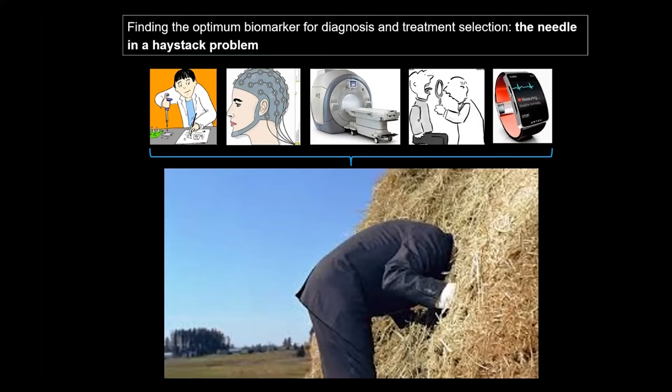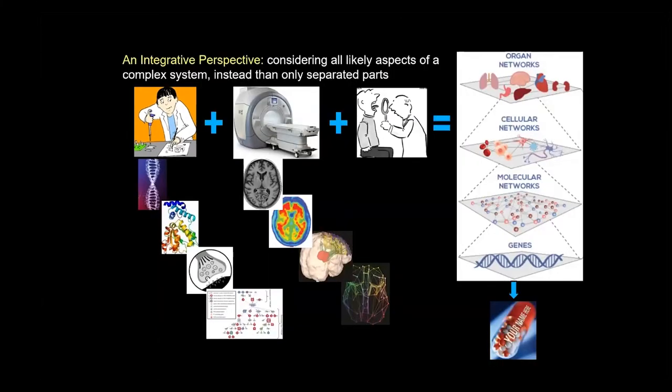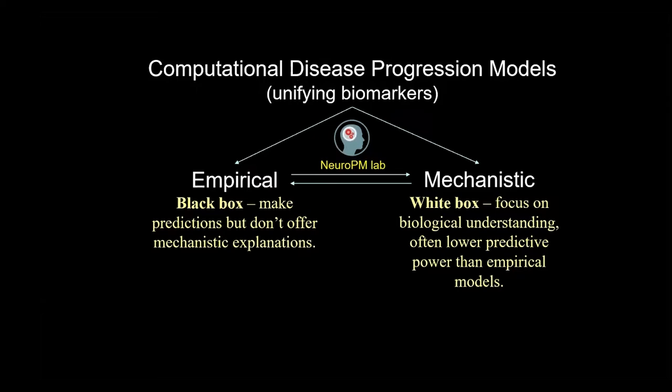How to identify the optimal biomarker for tracking the disease progression associated with each disorder, and what if at the end there is no optimal biomarker? In our group, rather than focusing on a specific biomarker or a specific data modality, we are assuming an integrative approach that focuses on aggregating the different layers of information available for each patient. The question is then how to combine all this massive amount of data in a biologically meaningful way.